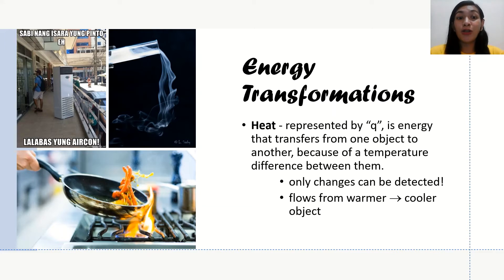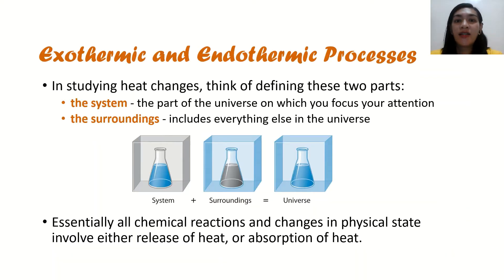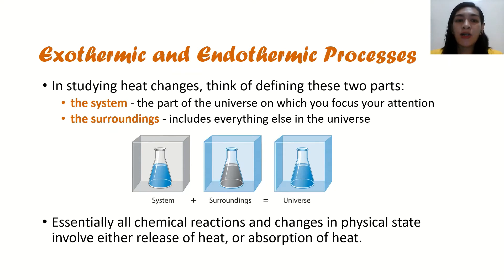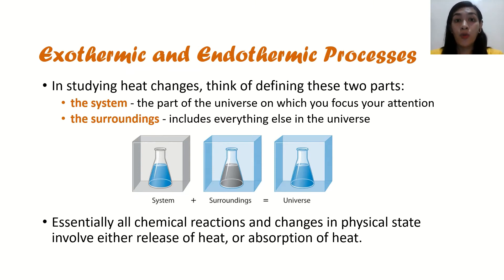Heat could be absorbed or it could be released in a chemical reaction. In studying heat changes, you should remember two parts: the system and the surroundings. The system pertains to the part of the universe on which you focus your attention, and the surroundings would be everything else in the universe. The system here is the chemical reaction inside your flask or the chemicals, and the surroundings would be the environment. All chemical reactions and changes in physical state involve either the release of heat or the absorption of heat.